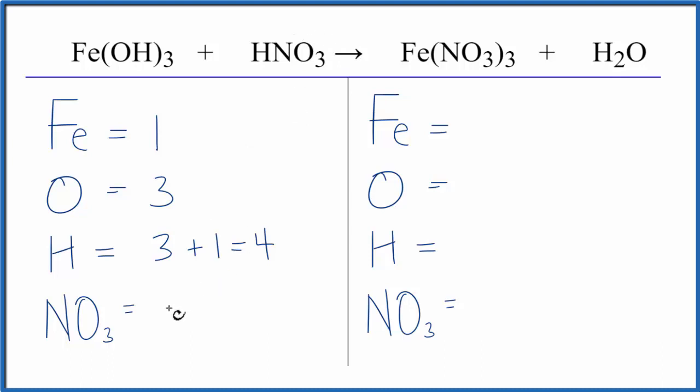So we have one nitrate ion here on the product side, one iron, and then for our oxygens, we have just the one, because we're going to leave these here with the nitrate ion. Hydrogens, two, then we have three of these NO3s, these nitrate ions, three of those.